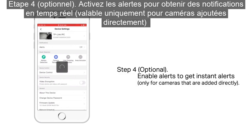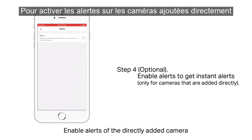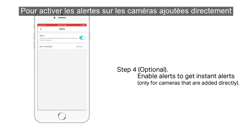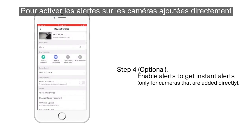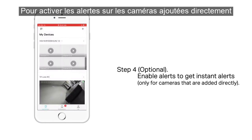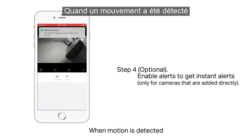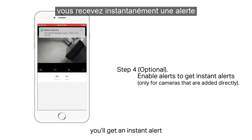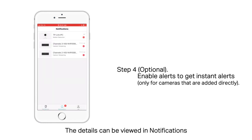Step 4 (Optional): Enable alerts to get instant alerts. Only for cameras that are added directly. Enable alerts of the directly added camera. When motion is detected, you'll get an instant alert. The details can be viewed in notifications.